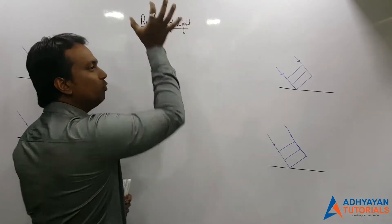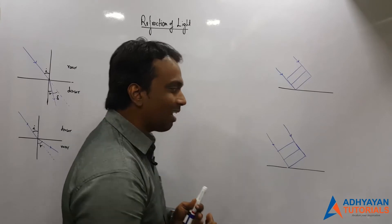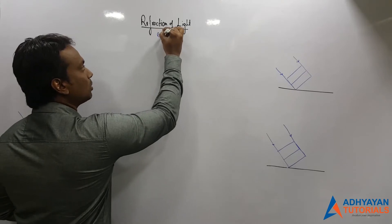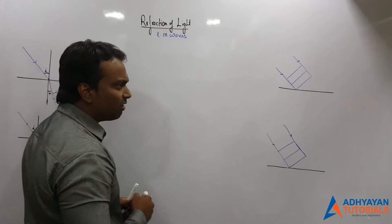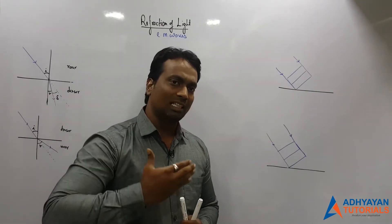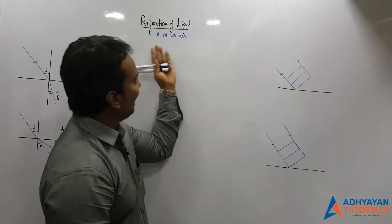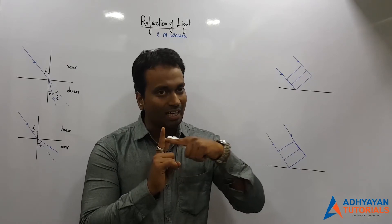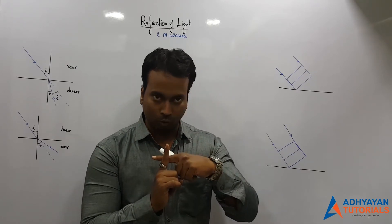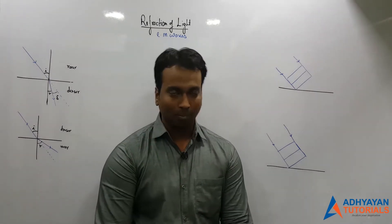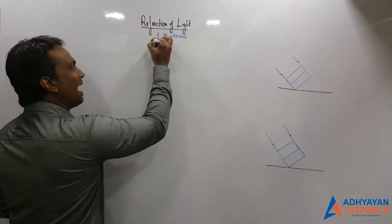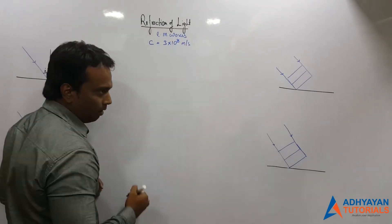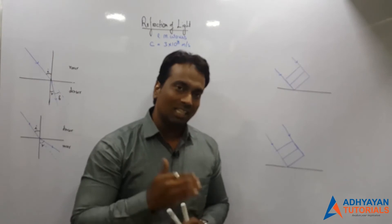Before we understand refraction of light, we need to understand what exactly we mean by light. Light is nothing but a form of energy, and this energy is propagated in the form of electromagnetic waves. A wave is an oscillatory disturbance that is propagated through a medium. In electromagnetic waves, it is the oscillating electric field and magnetic field — which are mutually perpendicular to each other — that propagate through the medium. These electromagnetic waves have maximum speed in vacuum, that is 3 × 10⁸ meters per second, but as soon as they enter into a medium...